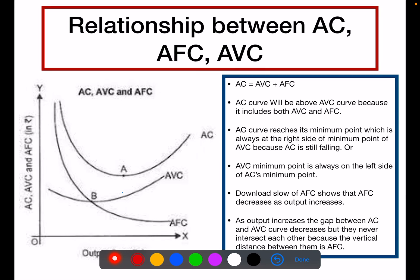Hello everyone. Today's topic is the relationship between AC, AFC, and AVC — that is, average cost, average fixed cost, and average variable cost. The first point is that average cost is equal to average variable cost plus average fixed cost, so it is a combination of both.